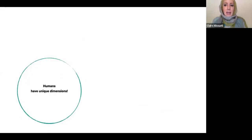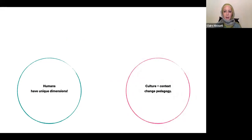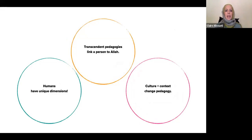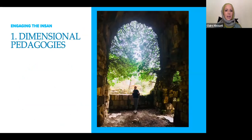The first theme clustered around the idea that there are unique perspectives on human beings from an Islamic perspective. The second is that culture and context changes pedagogy — it changes the way we teach Islam based on where we are. And the third theme is that transcendent pedagogies link a person to Allah. There are very interesting pedagogies that the educators described that were far beyond a Western understanding of education and pedagogy. So now I'm going to go through each one on their own.